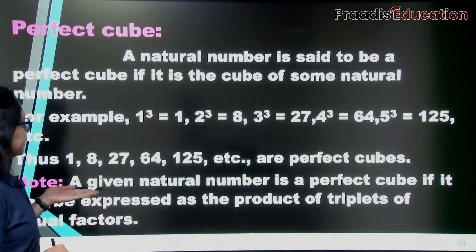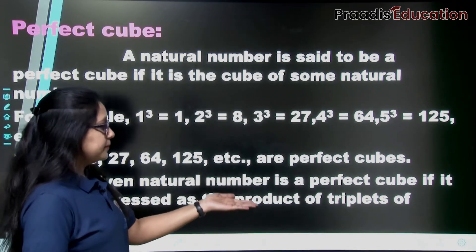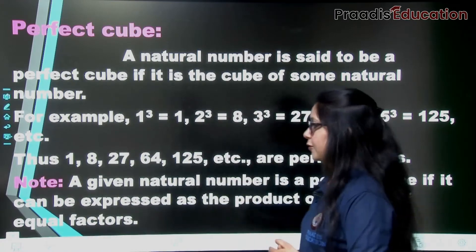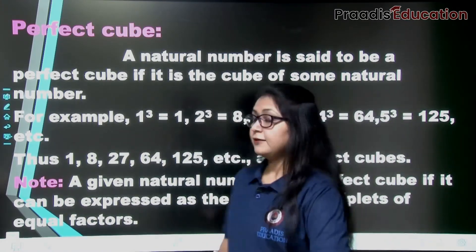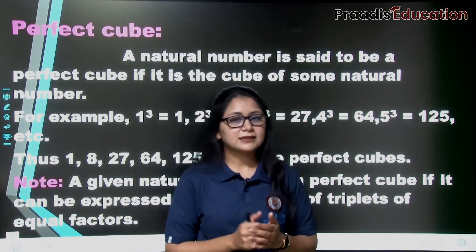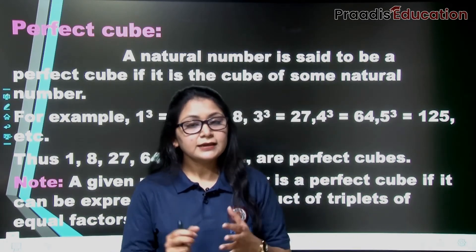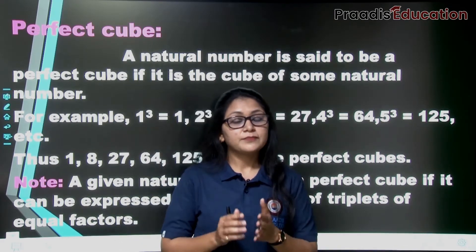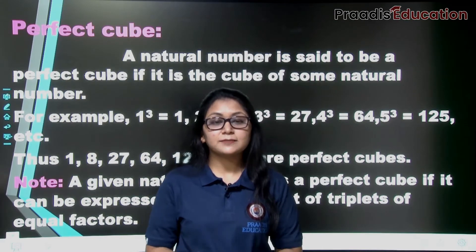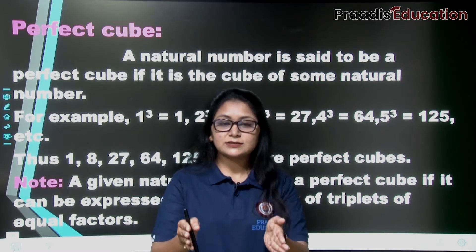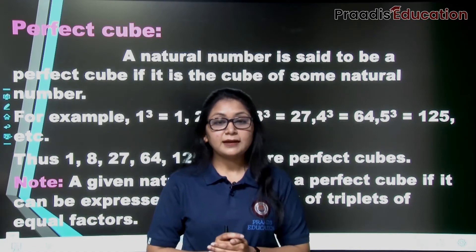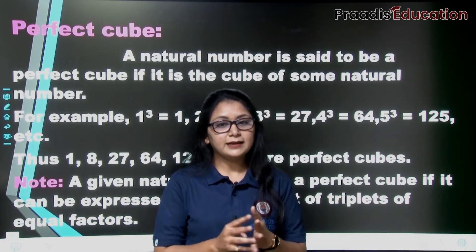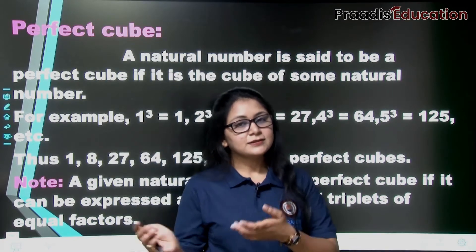Here is a note: a given natural number is a perfect cube if it can be expressed as the product of triplets of equal factors. This means we call any number a perfect cube when we can expand it and express it in triplets of its prime factors — meaning all the prime factors must form groups of 3. Let's see how.